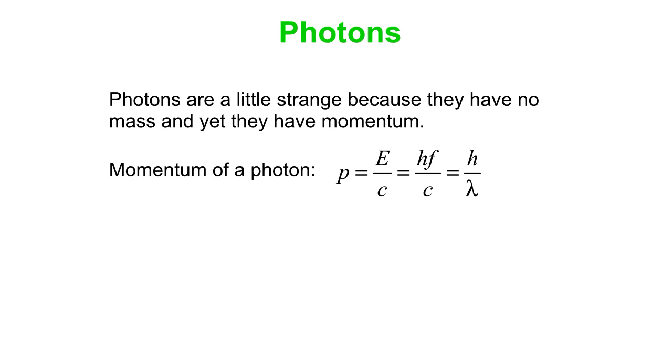E you can write as hf, so you can write the momentum as hf over C. And f is C over the wavelength, so the factors of C can cancel out and you're left with wavelength underneath. So you can then write it as momentum is h, Planck's constant, over the wavelength. So that's light, that's photons.